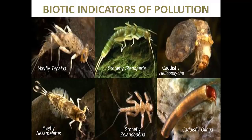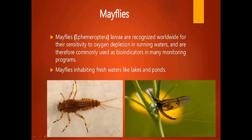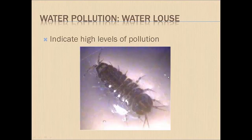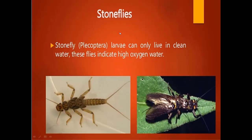These are different biotic indicators — mayflies, stoneflies, and caddisflies. Mayfly larvae are found in clean, well-oxygenated water and are recognized worldwide for their sensitivity to oxygen depletion in running waters, making them commonly used as bio-indicators. Mayflies inhabit fresh waters like lakes and ponds in clean conditions. Water louse, however, is found in polluted water, and its presence indicates high levels of pollution. Stoneflies are also found only in clean, well-oxygenated water and indicate high oxygen content.